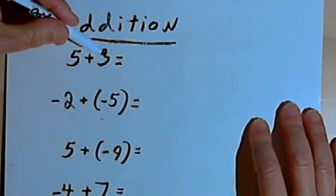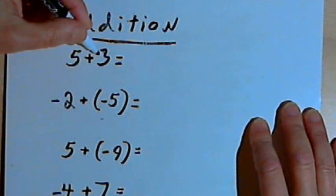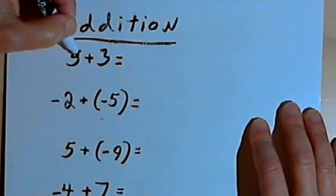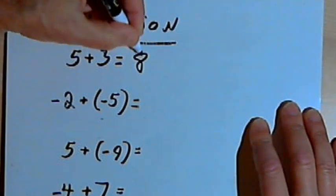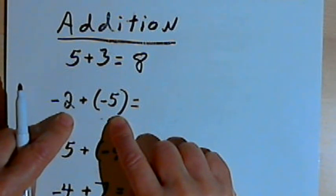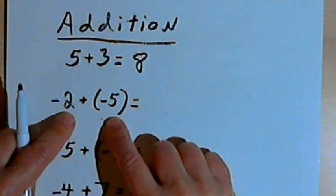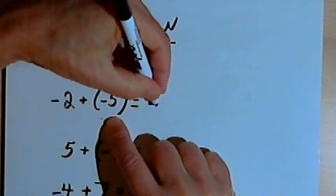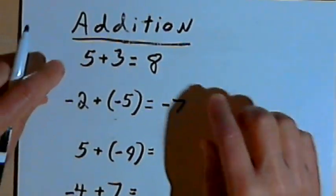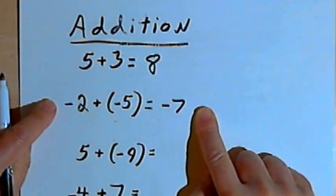The first problem is 5 plus 3. Both of these are positive numbers, and the rule for addition says that if both numbers are positive, then the result — the sum — will be positive. So 5 plus 3 is going to equal 8. Now if both signs are negative, like negative 2 plus negative 5, I'm going to add the 2 and the 5 together, but the result will be negative. So that's going to be negative 7. If the signs are both positive, the sum is positive. If the signs are both negative, the sum is negative.